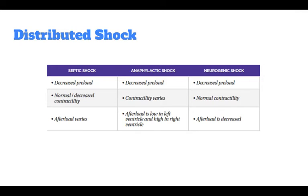Vasopressors may be needed to support blood pressure. After fluid resuscitation, vasopressors are given if needed and according to the type of septic shock. Normotensive persons are usually given dopamine. Warm shock is treated with norepinephrine and cold shock is treated with epinephrine. Transfusing packed red blood cells to bring hemoglobin above 10 grams per dL treats decreased oxygen-carrying capacity. As blood cultures return, focus antibiotic therapy to the particular microbe and its resistance patterns.